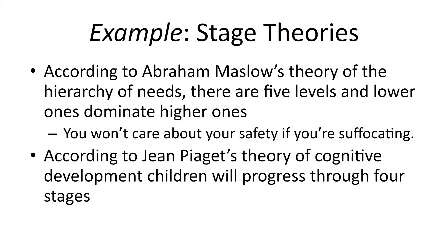Abraham Maslow, who came up with the hierarchy of needs, framed it in terms of stages. You have to satisfy lower stages — basic necessities like breathing, heat, food, and drink — before higher ones become relevant. Simply put, you won't care about personal safety if you're suffocating. Lower-level needs have more importance. Piaget similarly described how children progress through four stages, during each of which specific developmental changes occur.